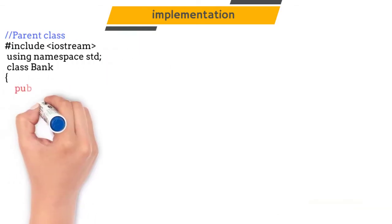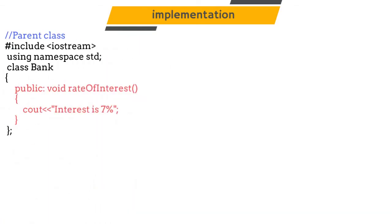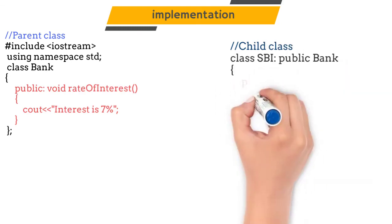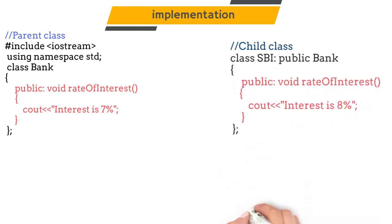So for implementing this example, we need to create a parent class Bank which will have the rate of interest method, and that method will print the rate of interest of that bank. Now we will inherit our first child class called SBI. Rate of interest of SBI is 8%, so our method rate of interest will print the rate of interest is 8%.